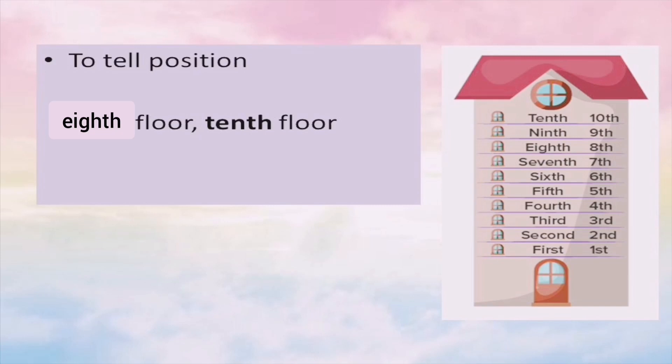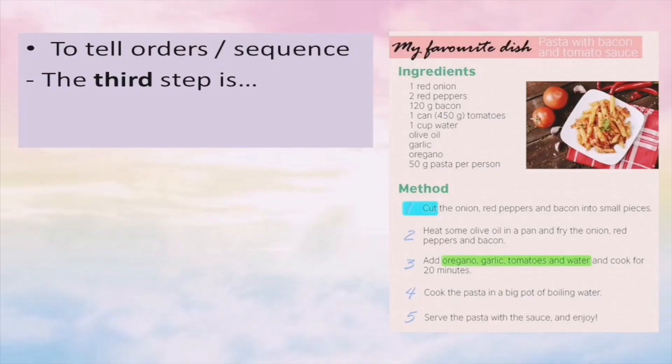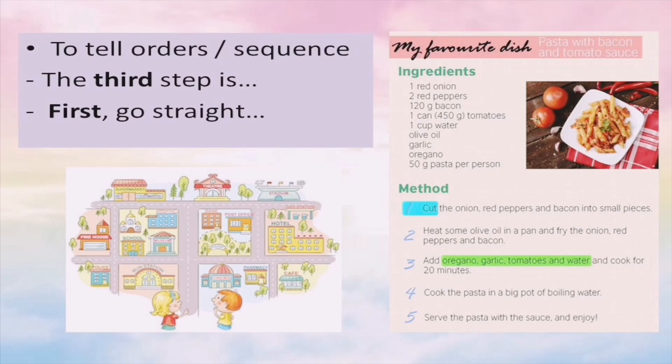Other than dates, you also use ordinal numbers to tell position. For example, for floors you say '8th floor,' '9th floor,' '22nd floor.' If you're in a race, you tell the position — you got first place, second place, third place, and so on. You also use ordinal numbers to tell orders or sequence. For a recipe, you say the first step, the second step. For directions: first you go straight, second you turn right.